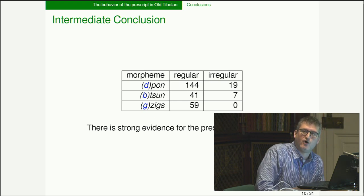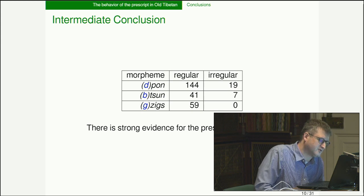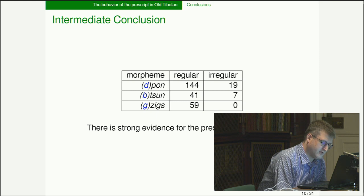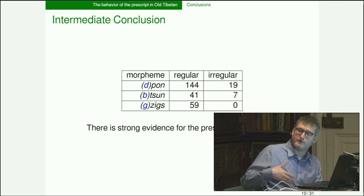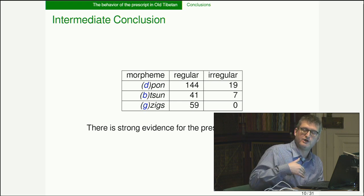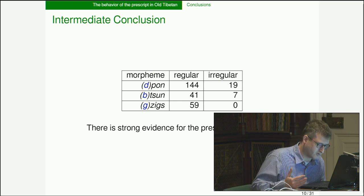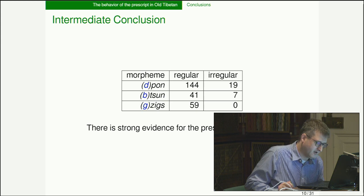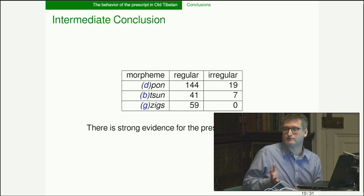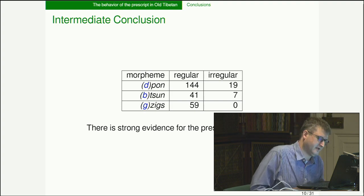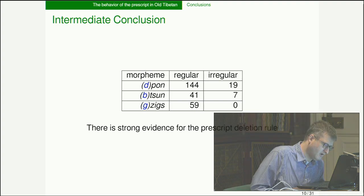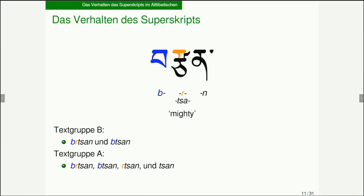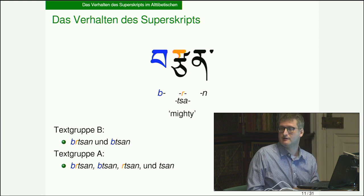Looking at these morphemes throughout the Old Tibetan documents online, you get the pattern: keep the prescript after vowels and word-initially; delete the prescript after consonants word-internally. There are exceptions that need to be looked at, but the evidence is quite strong for this pattern. That was it for the prescript; now let's look at superscripts.